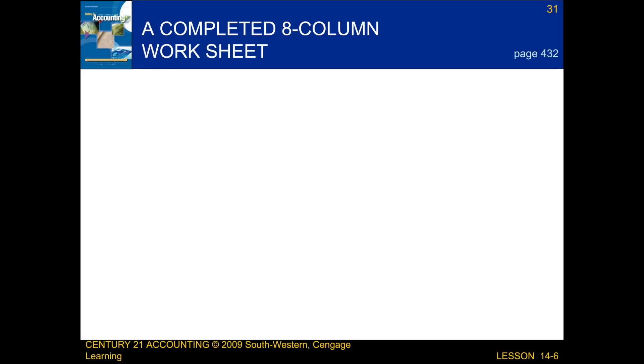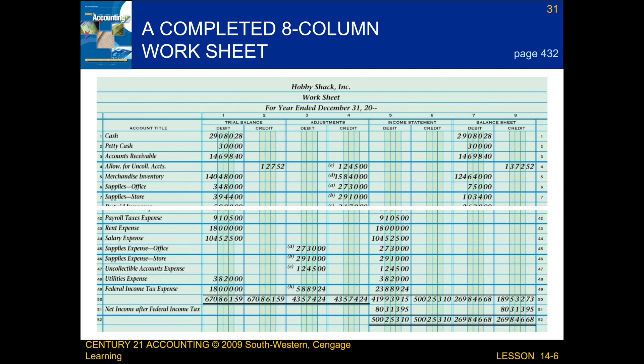Next we're going to be talking about a completed eight-column worksheet for a merchandising business. What we're looking at here is a completed eight-column worksheet for a merchandising business. As you can see, the worksheet has been single-line ruled, all of the numbers have been totaled and ruled, and since the numbers in each of these columns are the same, we can draw a double line rule.